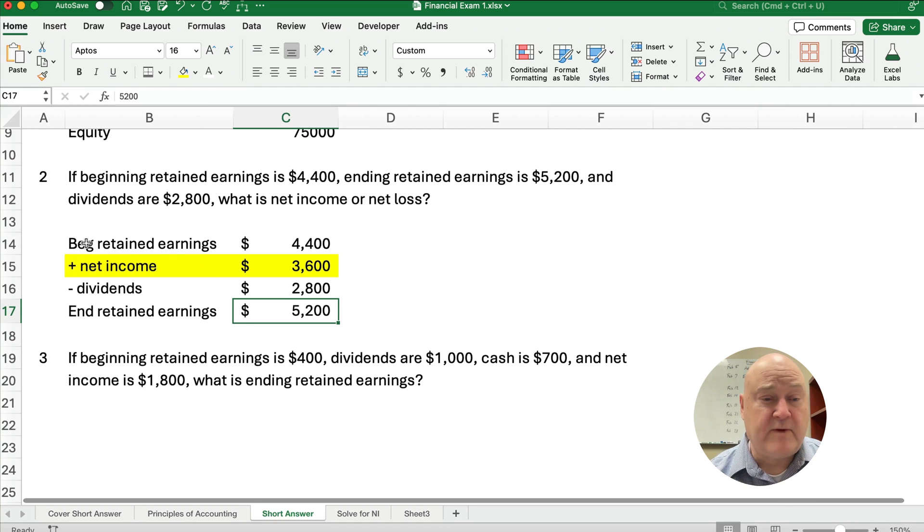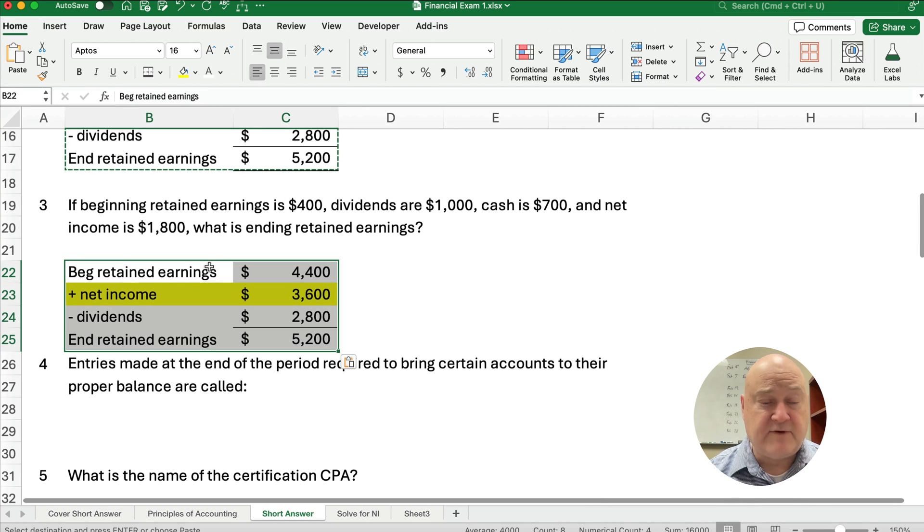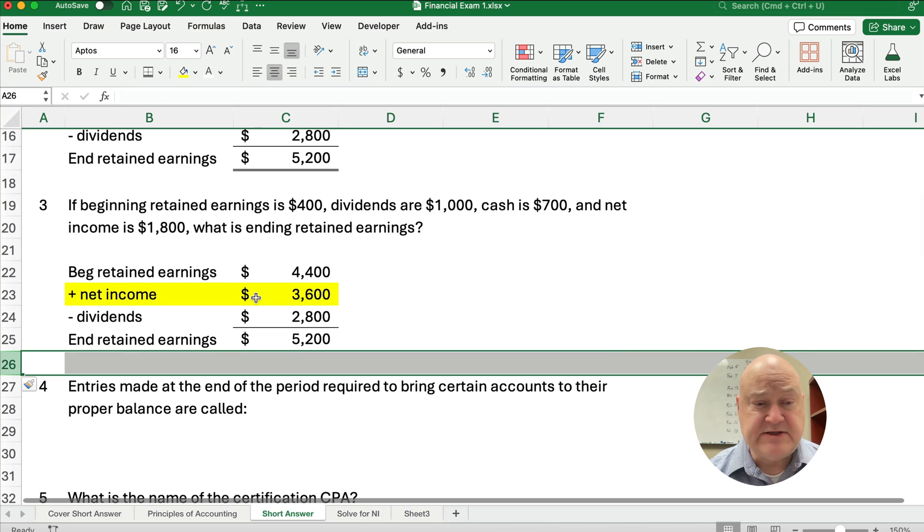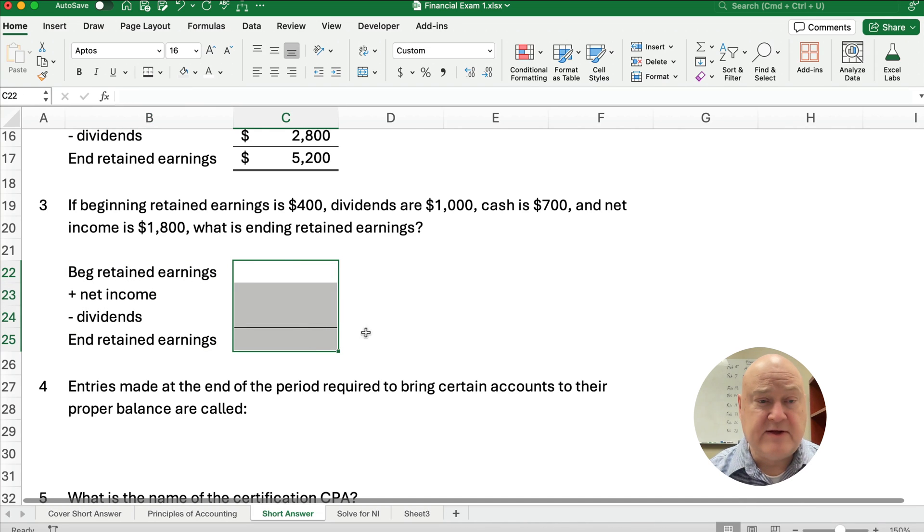So our net income, if we take $4,400 plus $3,600, that ends up being $8,000 minus $2,800 gives us ending retained earnings of $5,200. So we're going to use this format every time we have a problem like this. In fact, our next one has a problem very similar. We have some different information. So we need to use this format every time, and we'll solve with new numbers.